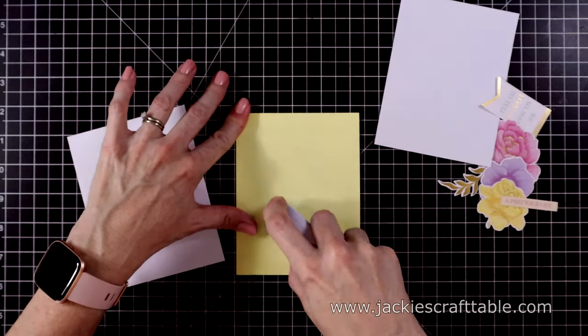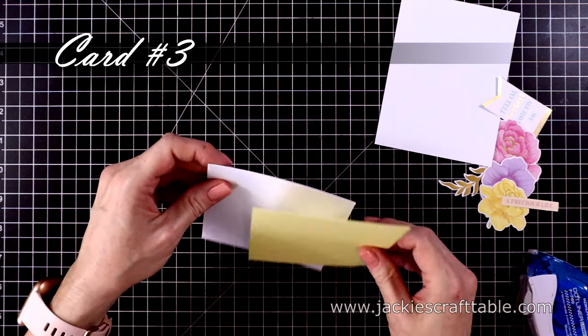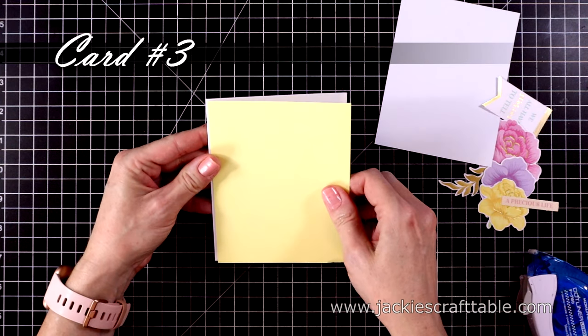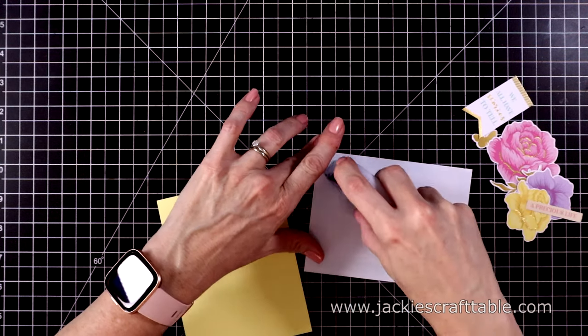On card number three, I'm going to use the three roses from the die-cut shapes. But let's put this card together first using a piece of yellow cardstock. This completely covers the white card base.